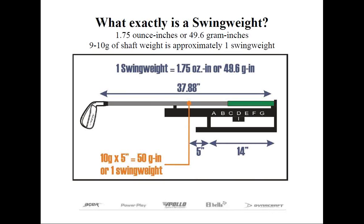So looking at our example again on the swing weight scale, it's 39 inches long. The fulcrum point, we say, is always 14 inches. So that leaves our shaft approximately 5 inches from the fulcrum point.